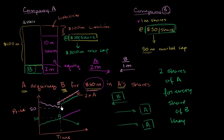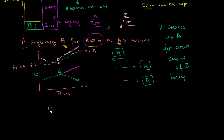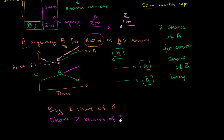If you think the transaction is definitely happening, you could buy one share of B — go long one share of B — and then short 2 shares of A. This will only work if you know the transaction is going to happen, because right now, since B is trading at a little bit of a discount, 2 shares of A are going to be worth more than 1 share of B.